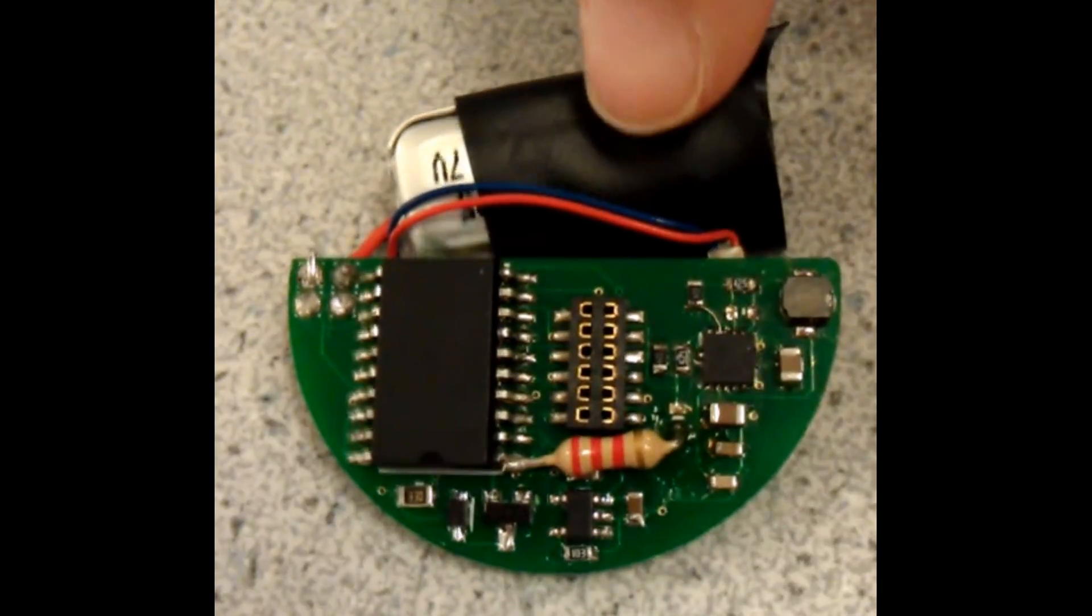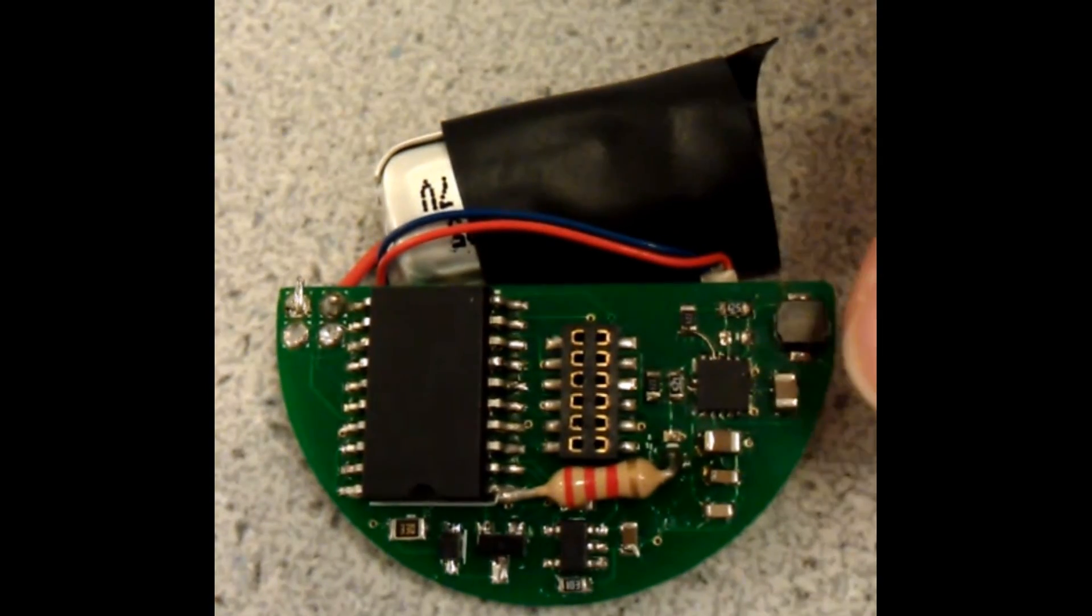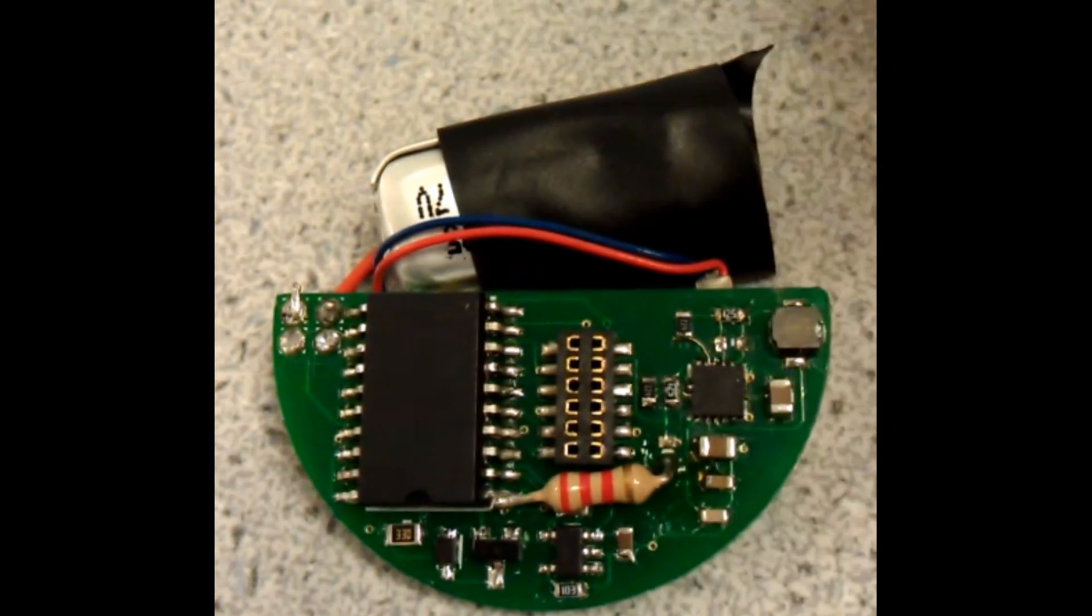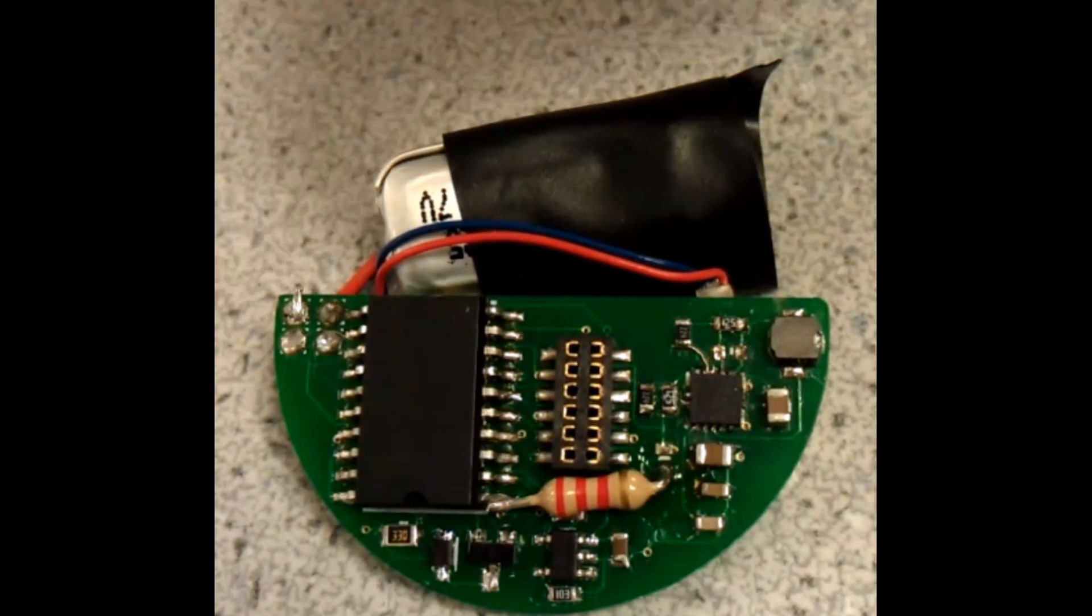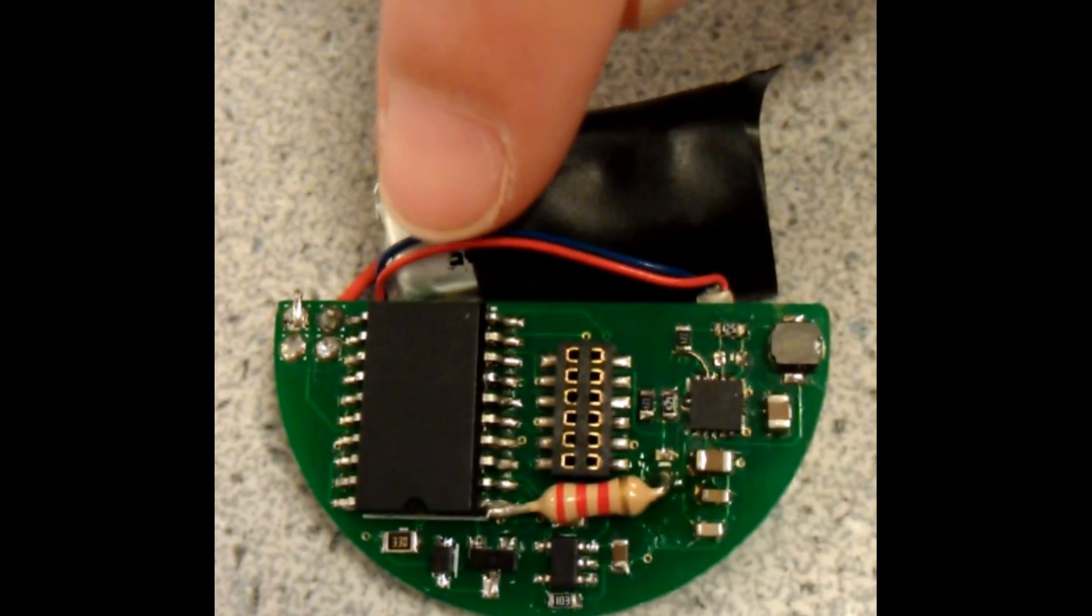On the front, we have the lithium polymer battery here as well as a boost converter which outputs a constant 3.3 volts. We have a charging circuit for the lithium polymer battery and the temperature compensated real-time clock.